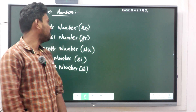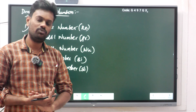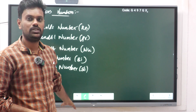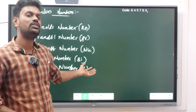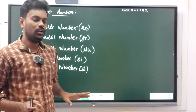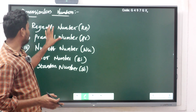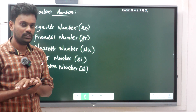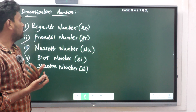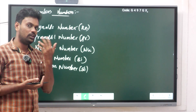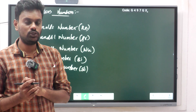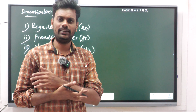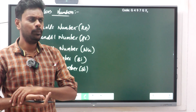Good evening students. The next topic is dimensionless numbers for free convection and forced convection. I have listed out some important dimensionless numbers. The significance of these numbers is that they have no unit — that is why they are called dimensionless numbers. We will use these numbers in applications like convection and conduction. In our syllabus, dimensionless numbers for convection only are covered, and we will see them one by one.